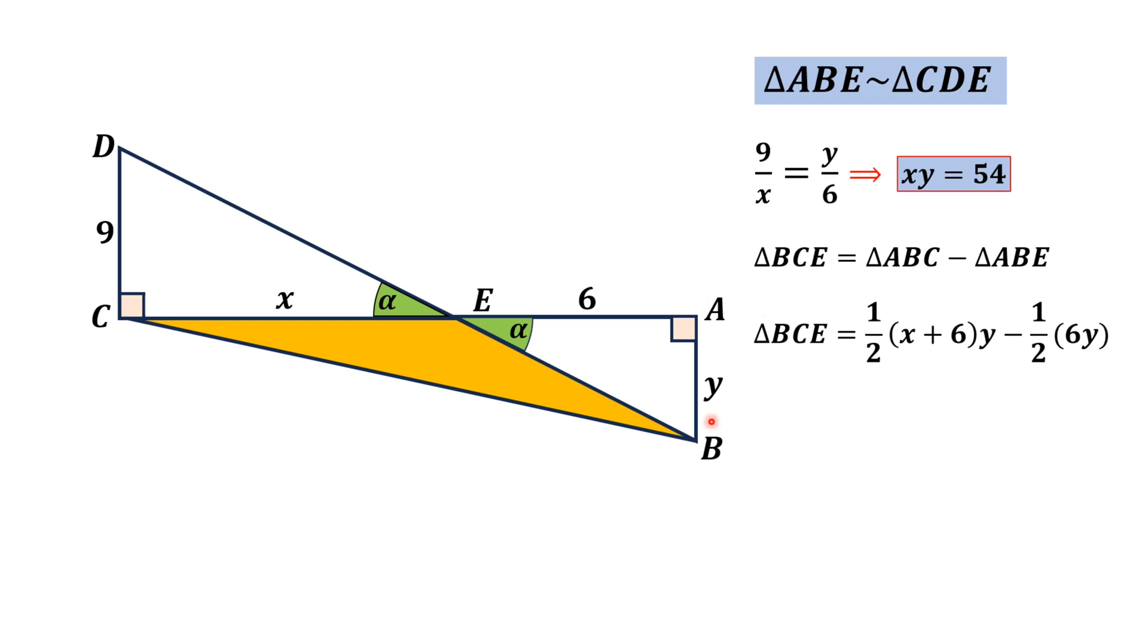Area of triangle ABC equals - one side is X plus 6 and the other side is Y - so half times (X plus 6)Y minus area of triangle ABE, which equals half times 6Y.